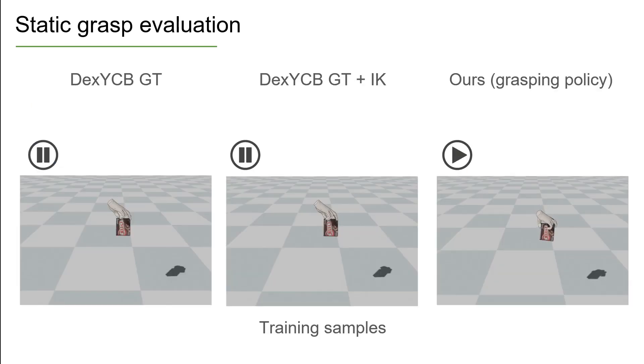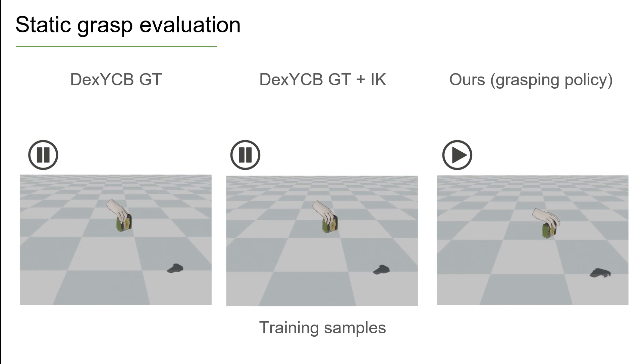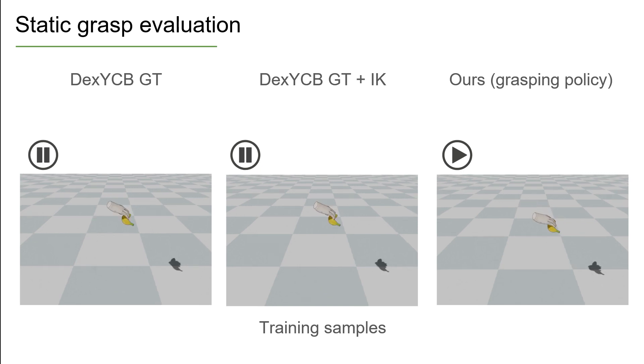We show that static grasps often lead to object slipping if they are evaluated in a dynamic setting, which is done via a physics simulation in our case. Our method considers the dynamic nature of the task and learns to correct this by considering the contacts and forces required to hold an object.